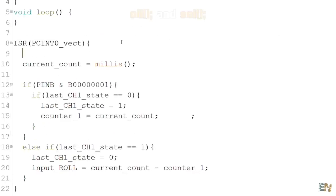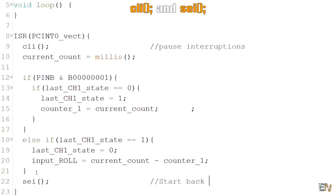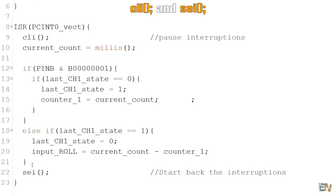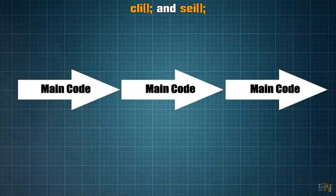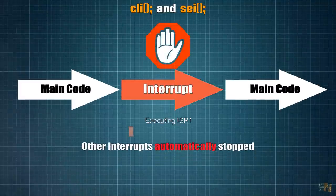One last thing, using CLI and SEI, we can stop or resume all global interruptions inside of our code. There are some people who place the CLI before the code of the ISR and the SEI at the end of the code of the ISR. But I've already told you that during an interruption, all global interruptions are automatically disabled so there is no need of using CLI or SEI.